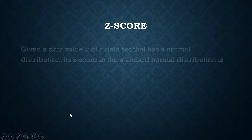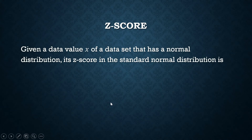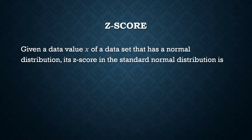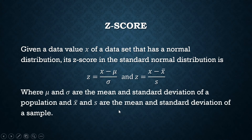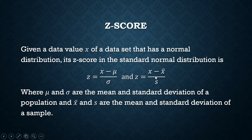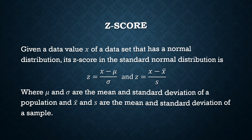So how do we compute for the Z-score? Given a data value X of a data set that has a normal distribution, its equivalent Z-score in the standard normal distribution is X minus the population mean divided by the population standard deviation. Or if your set is only a sample, it's equal to X minus the sample mean divided by the sample standard deviation.